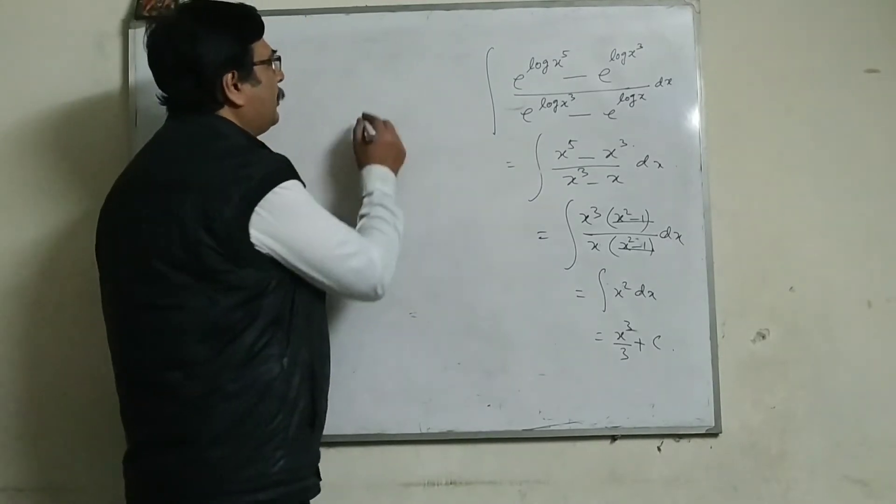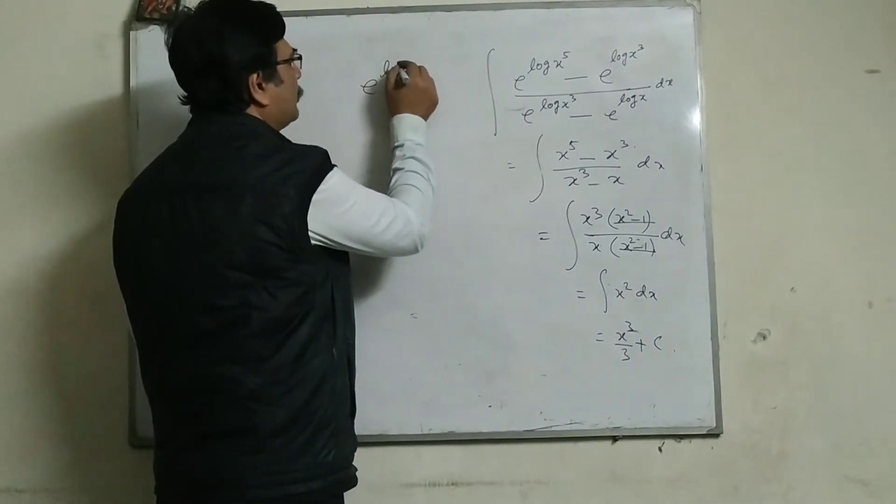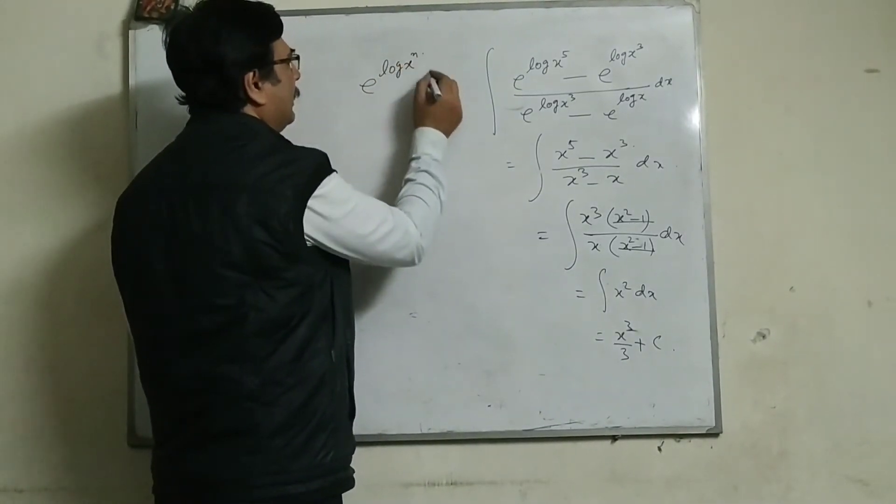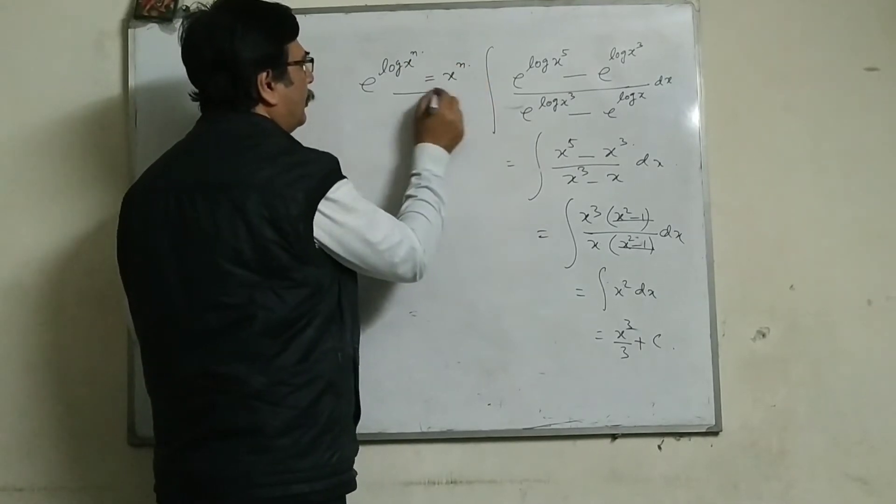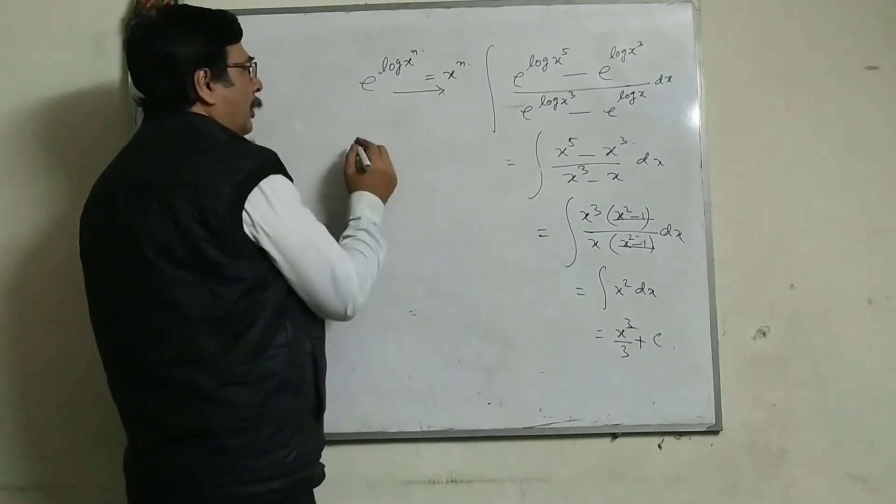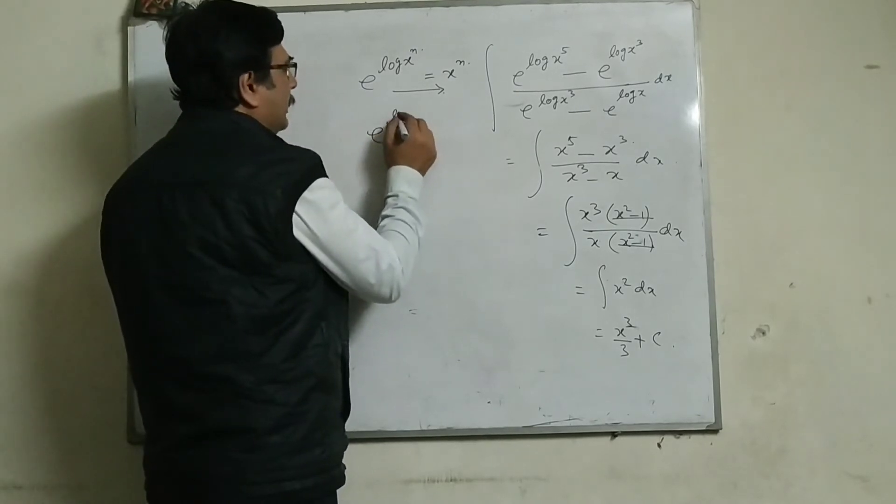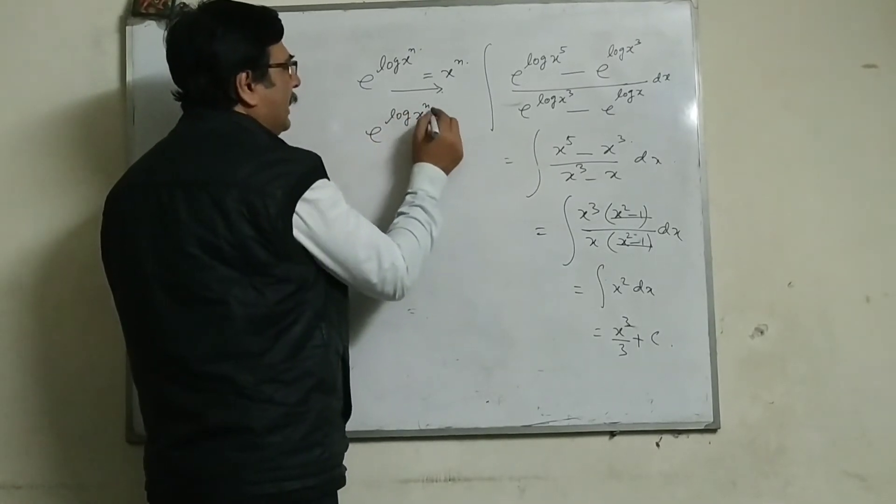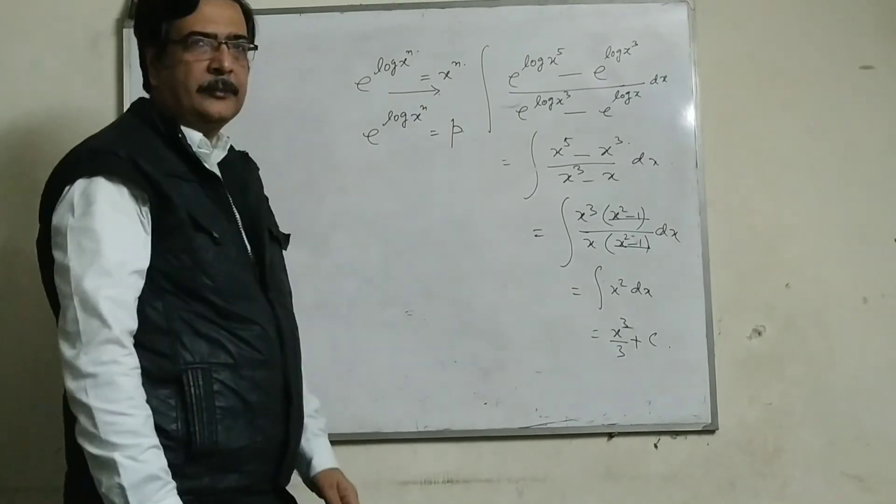That is, how e to the power log x to the power n becomes x to the power n. How? Let us take e to the power log x to the power n is equal to p.